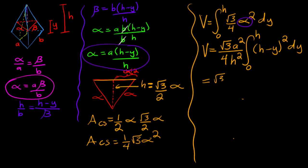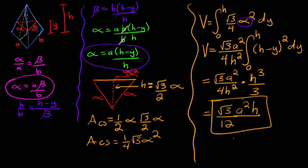This equals square root of 3 times A squared over 4H squared, times—doing the integral—H cubed over 3. Putting this together, we get square root of 3 over 12 times A squared times H. That's the formula for the volume of the tetrahedron.